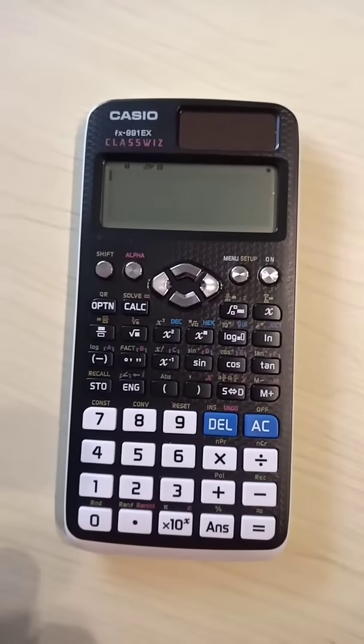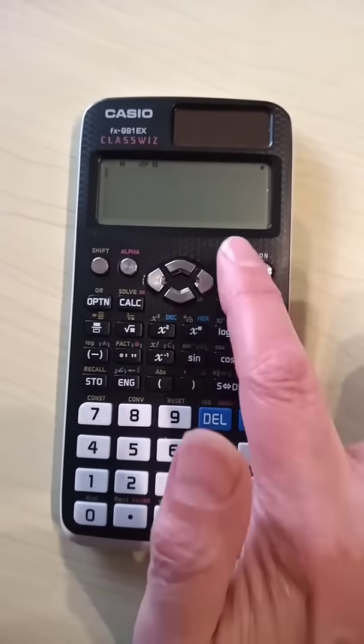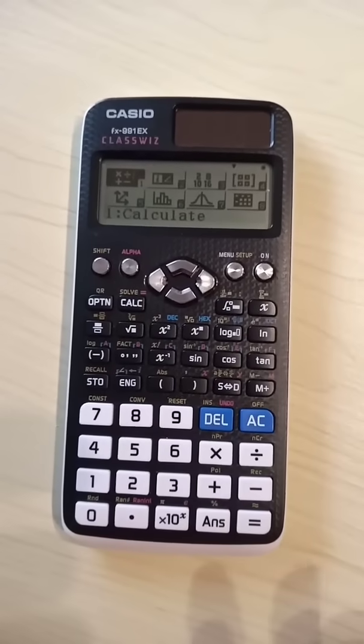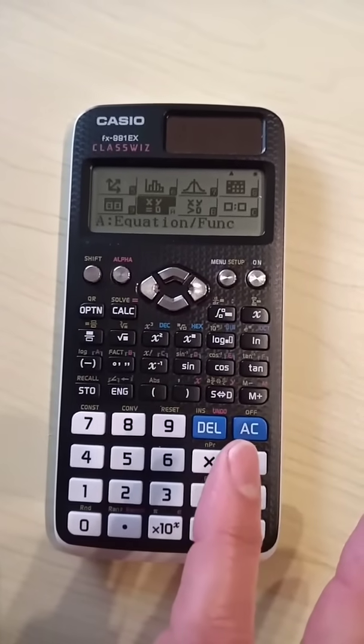Here's how to solve a quadratic equation using this Casio calculator. Press menu, scroll down and across to the right to find option A.